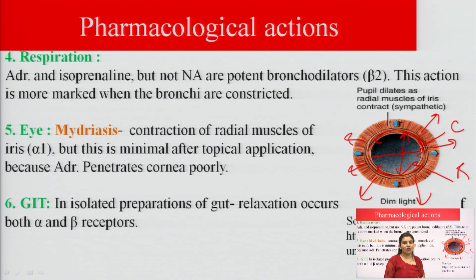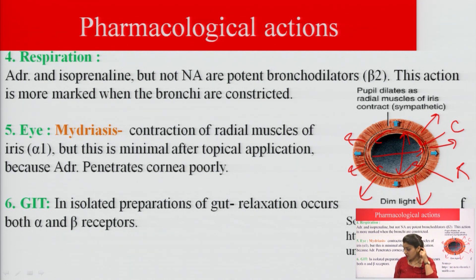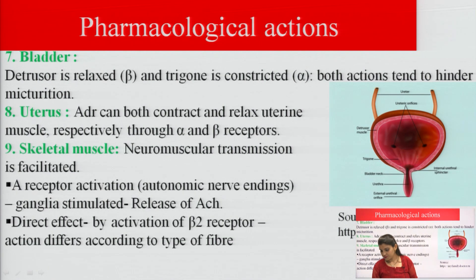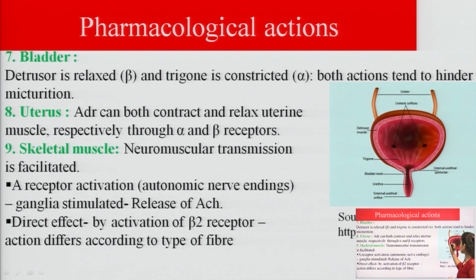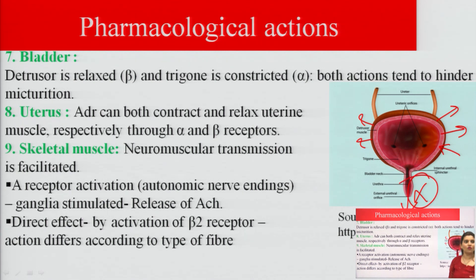On the GIT, in isolated gut preparations, adrenaline causes relaxation. On the bladder, the detrusor is relaxed and the trigone is constricted; both actions tend to hinder micturition, slowing bladder emptying.